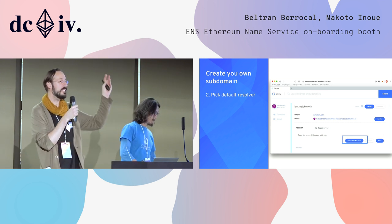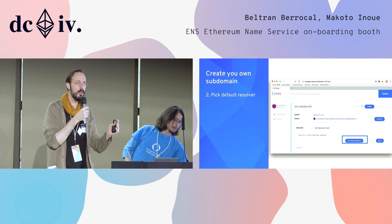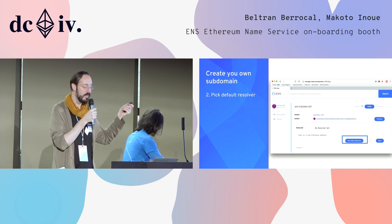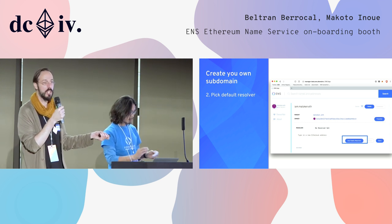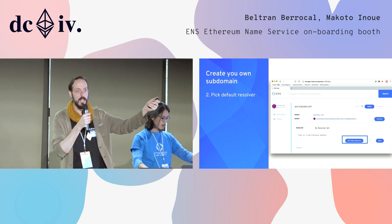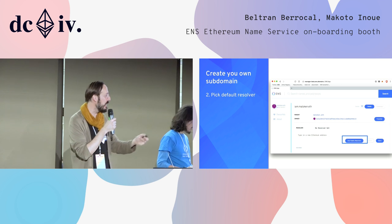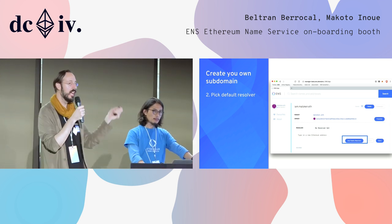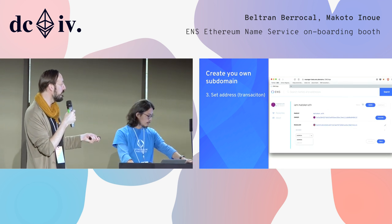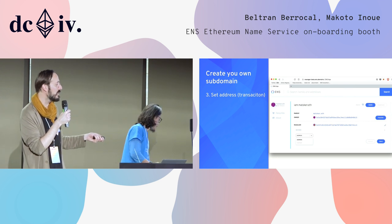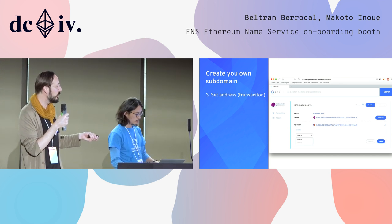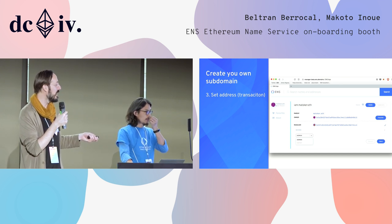You can set the resolvers — smart contracts that help translate. If you're a developer, you can develop custom resolvers. But everybody can use the default public resolver, which gives you a set of pre-translatable pointers — you can point it to an address, which is a wallet or a contract; you can point it to an IPFS hash; you can have a text field; and other things. You send a transaction, save it, and the resolver has been set. You need to point it to something, otherwise it's not usable yet. Content is the IPFS hash — you can point it to an IPFS or swarm hash as well.